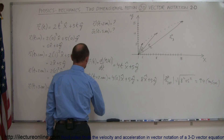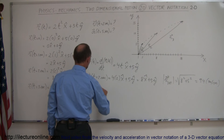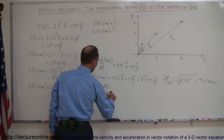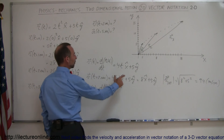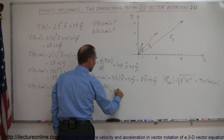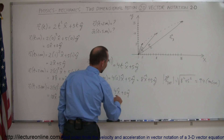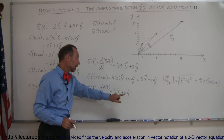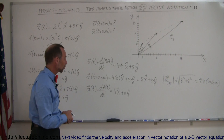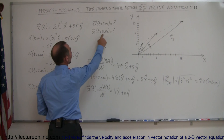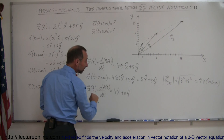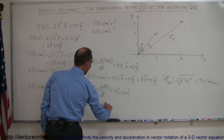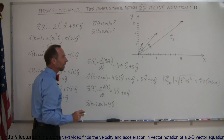The acceleration as a function of time is equal to the derivative with respect to time of the velocity. Taking the derivative of 4tx̂ + 5ŷ gives simply 4 in the x direction plus 0 in the y direction — so acceleration exists only in the x direction at 4 meters per second squared. Since there's no longer a time dependency, the acceleration at t equals 5 seconds is simply 4 in the x direction.